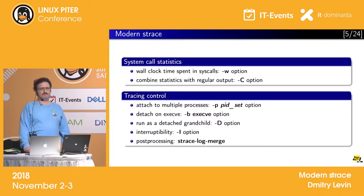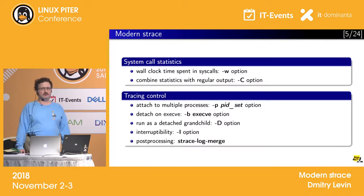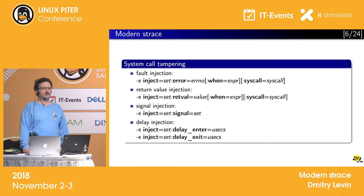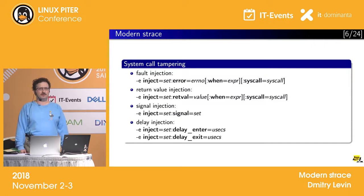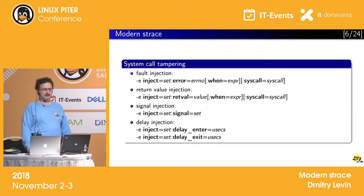There are now opportunities for compiling statistics - system call statistics. It could be wall clock times, counts and calls, the W option. We can combine statistics with regular output using the C option. We can change those calls - system call tampering. There are four different types: call tampering, fault injection, return value injection, delay injection, and signal injection.